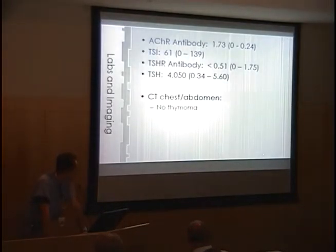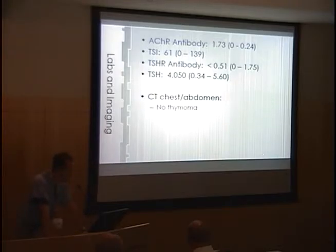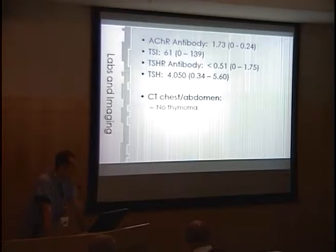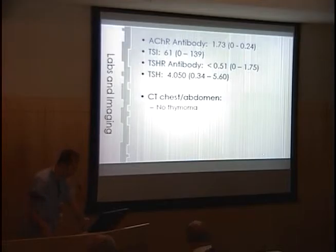As a result we sent for lab testing. Specifically we looked at the acetylcholine receptor antibodies, which were elevated at 1.73 — you can see the normal range in parentheses. We also tested his thyroid panel, which was all within normal range. As per protocol when evaluating myasthenia gravis, we also sent for a CT looking for a thymoma, which was negative on imaging.